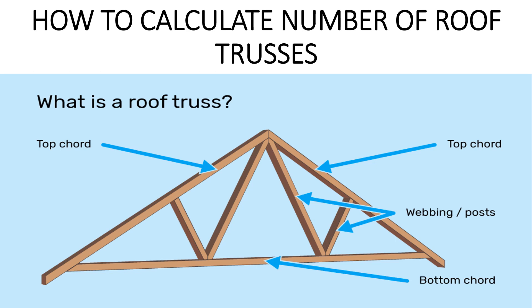Let's look at our typical truss. It has the following components: we have the top chord — the members lying and meeting at the top. Then we have the posts, and then we have the bottom chord. Remember, we have different types of trusses. The types depend on how the members of the truss are arranged. For example, we have the king post truss, where at the center we have the king post.